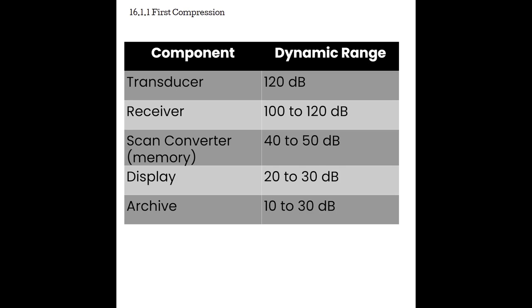Looking at the chart, the transducer has a dynamic range of 120 decibels, where the archive has a dynamic range of 10 to 30 decibels. That means the transducer is capable of processing a trillion times larger signals than the weakest signal it can process — that's 10 to the 12th. At the archive, at 10 decibels, the strongest signal can only be 10 times larger, or at 30 decibels, 1,000 times larger than its weakest signal.